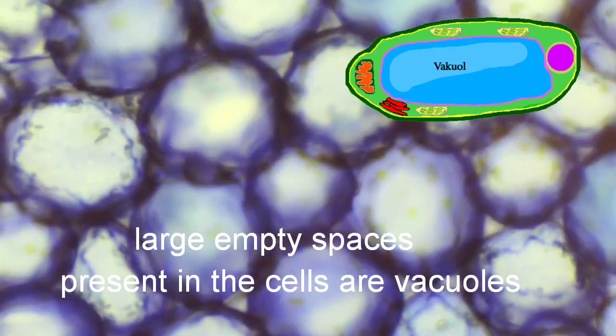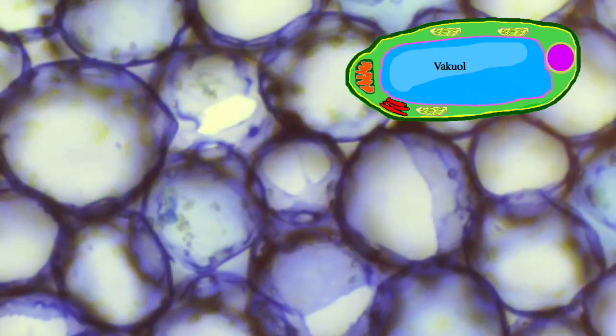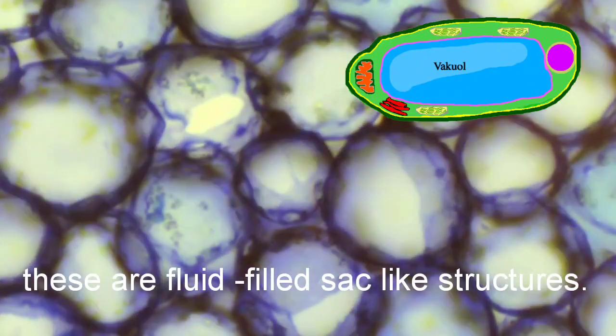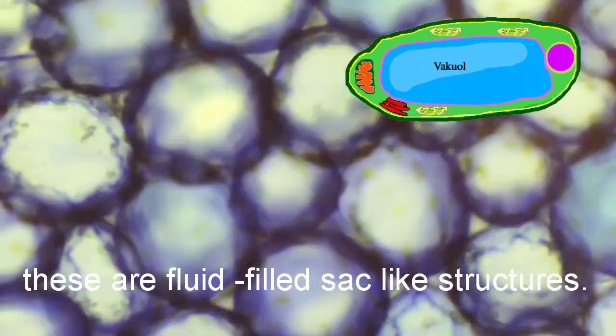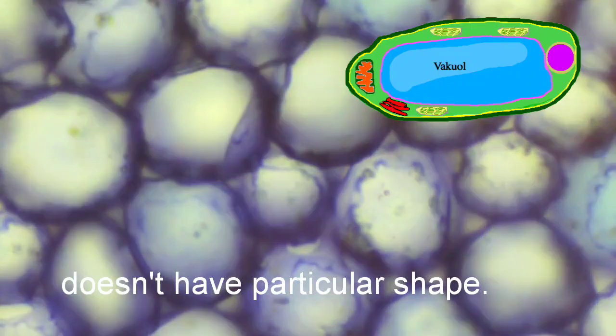Large empty spaces present in the cell are vacuoles. These are fluid-filled sac-like structures. They don't have a particular shape.